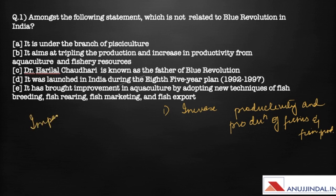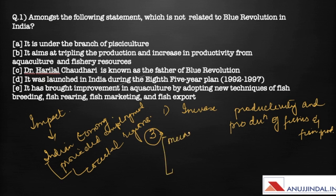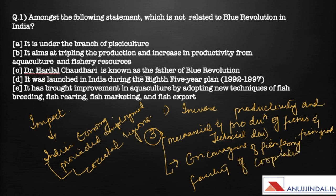The impact of Blue Revolution on India was that it increased the Indian economy and provided employment, mostly in the coastal regions. It focused on three essentials: first, mechanical and technical development; second, encouragement of fish farming; and third, facility of cooperative and marketing.